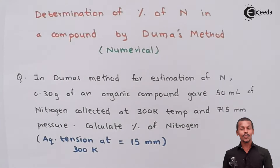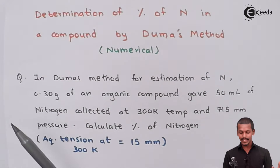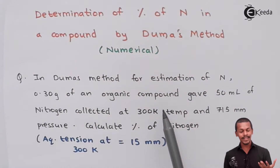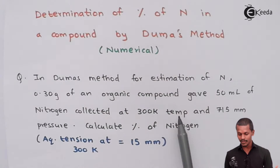In the last lecture we studied about Dumas method for the estimation of the percentage of nitrogen in an organic compound. Based on that, we are going to solve a numerical problem: how can we calculate the percentage of nitrogen if certain data are given to us? In Dumas method, 0.30 gram of an organic compound gives 50 ml of nitrogen collected at 300 Kelvin and 715 mm Hg pressure.